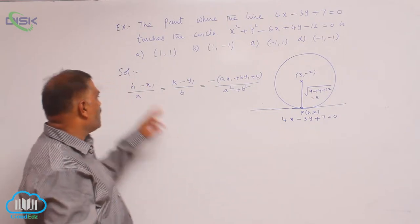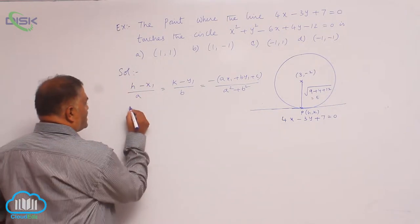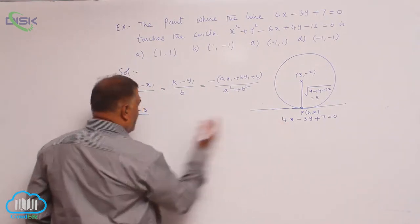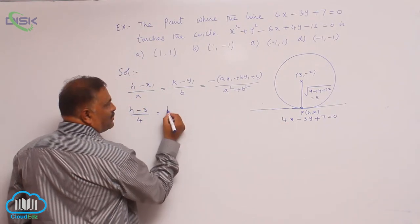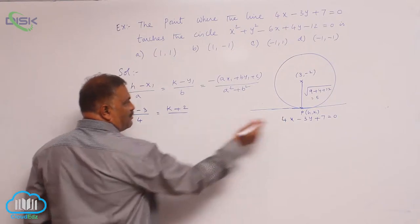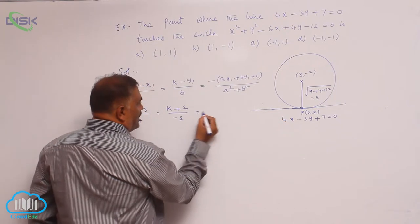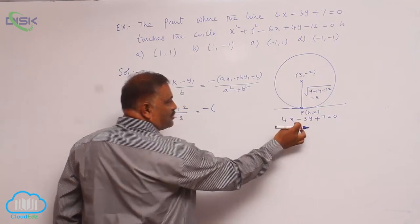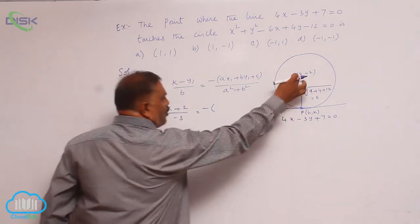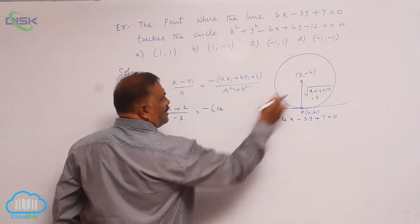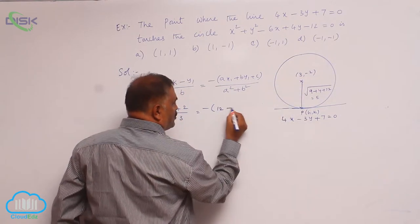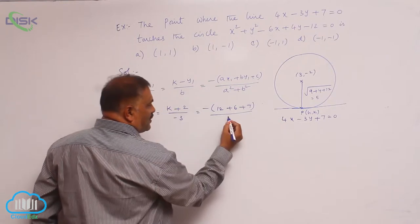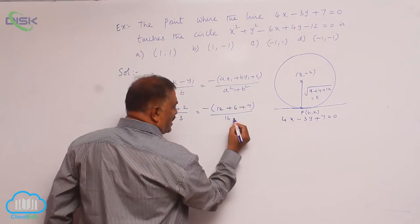Let us see the formula: h minus x1 is 3 divided by a which is 4 is equal to k plus 2 divided by minus 3 minus of. Now substitute the point 3 comma minus 2 in this straight line. 4 into 3 is 12, 3 minus 3 into minus 2 plus 6 plus 7 divided by a square 16 b square 9.